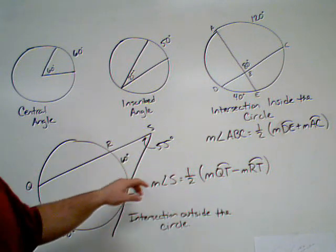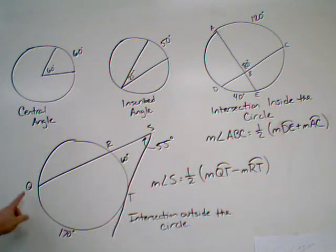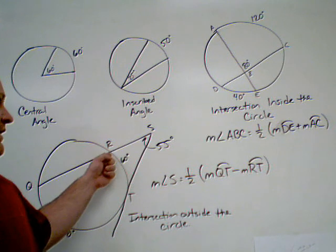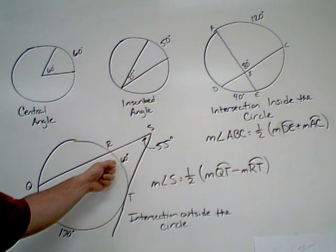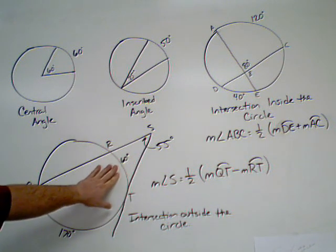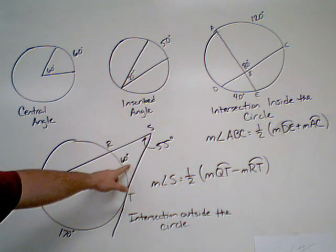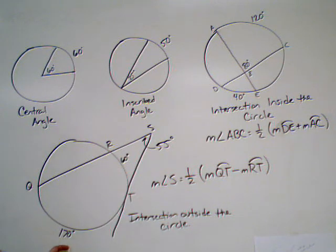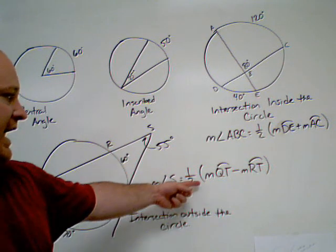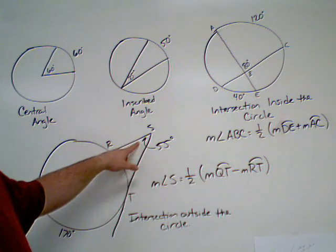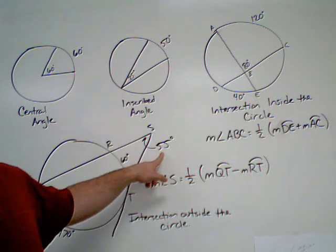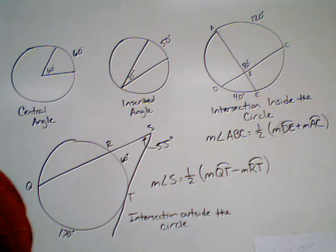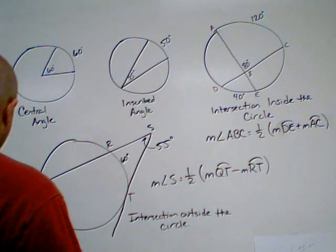I'm sorry, not add—I take the large intercepted arc, which is QT. The measure of that is 170 degrees, and I subtract the measure of the minor arc that's intercepted as well. So arc RT is 60 degrees. I subtract 60 degrees from 170 and I have 110 degrees, and I take half of that, which gives me angle S: 55 degrees. So that's four of them. There's one more.